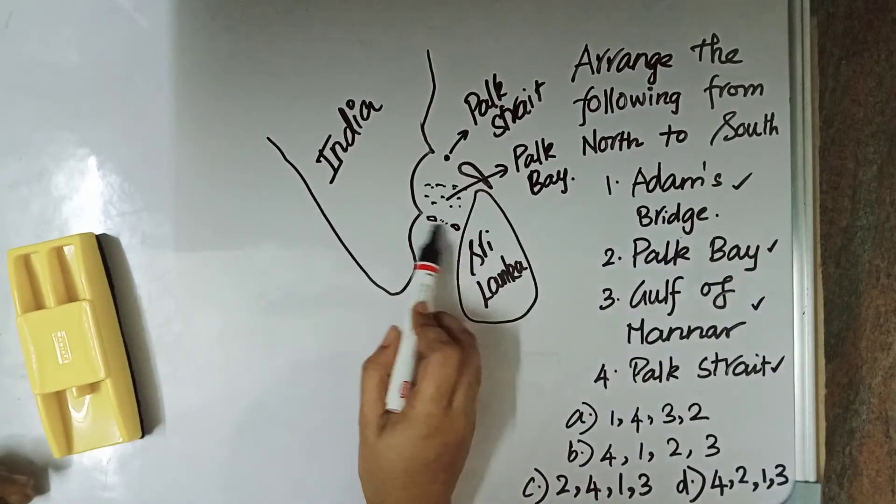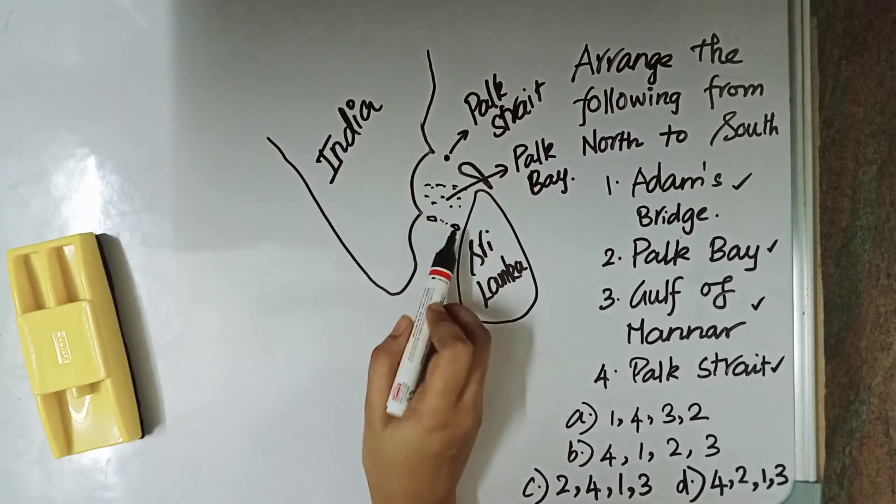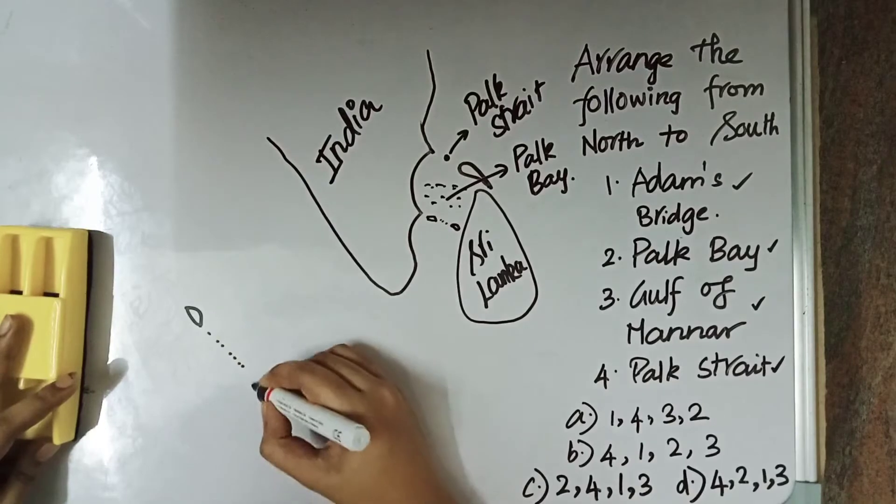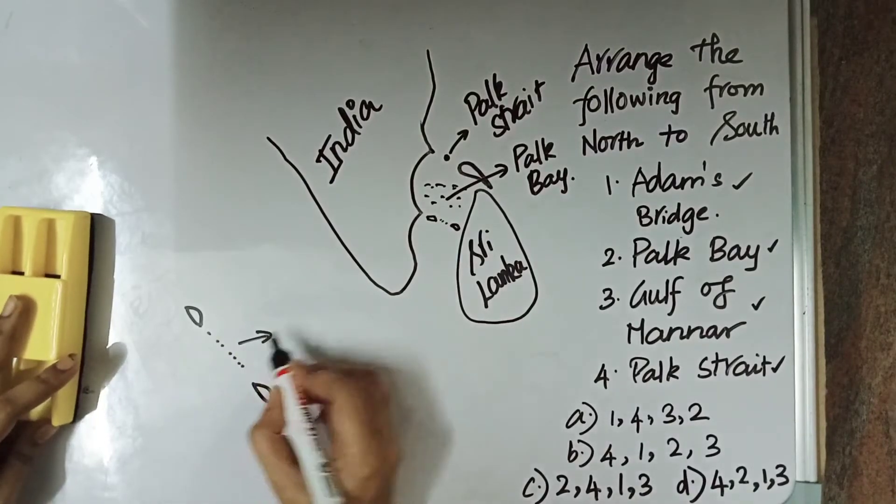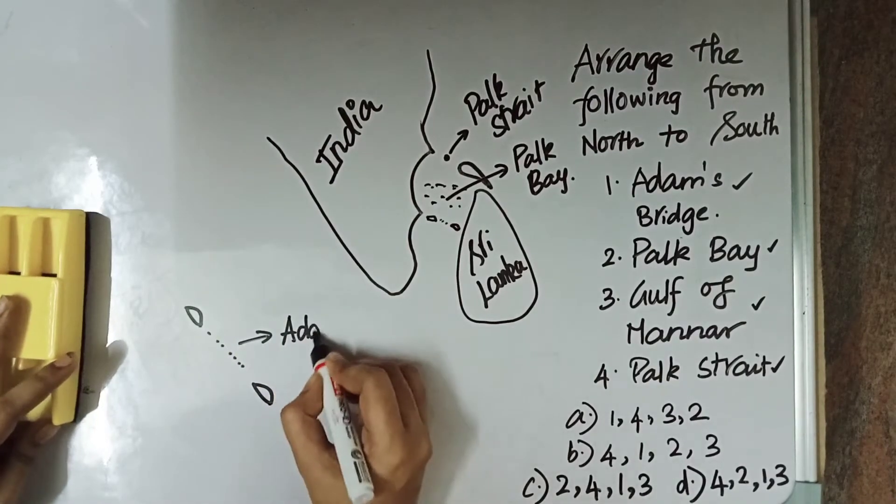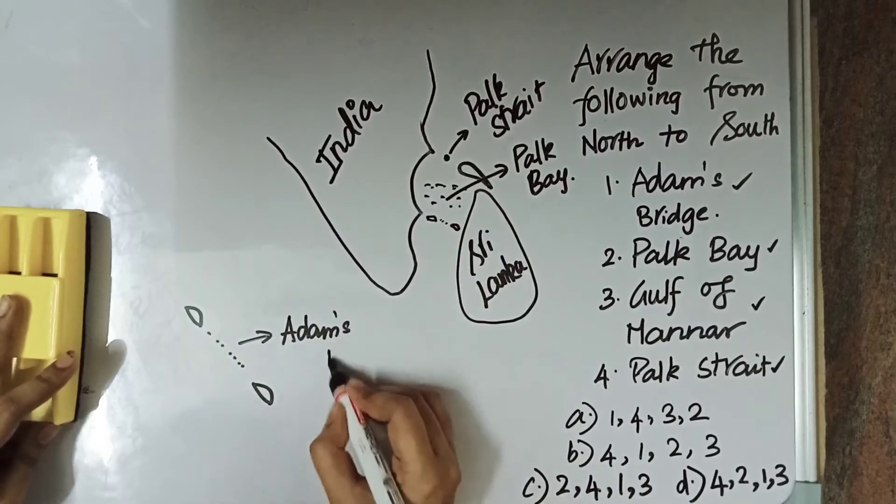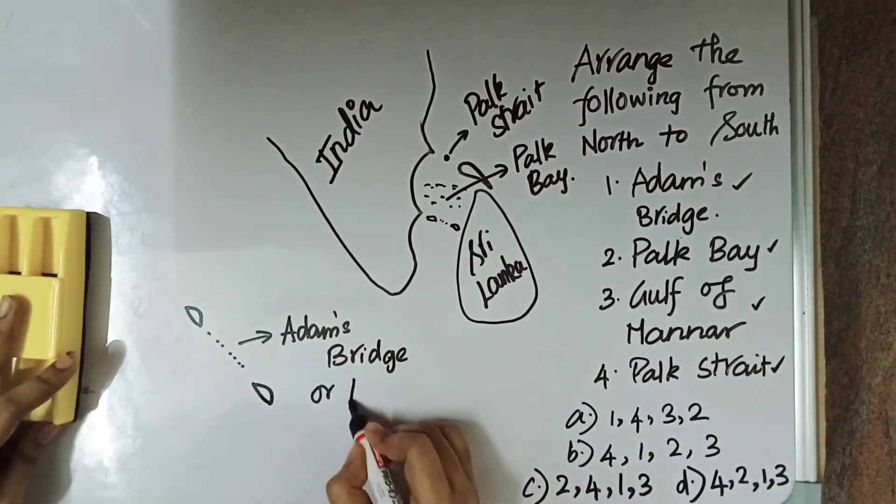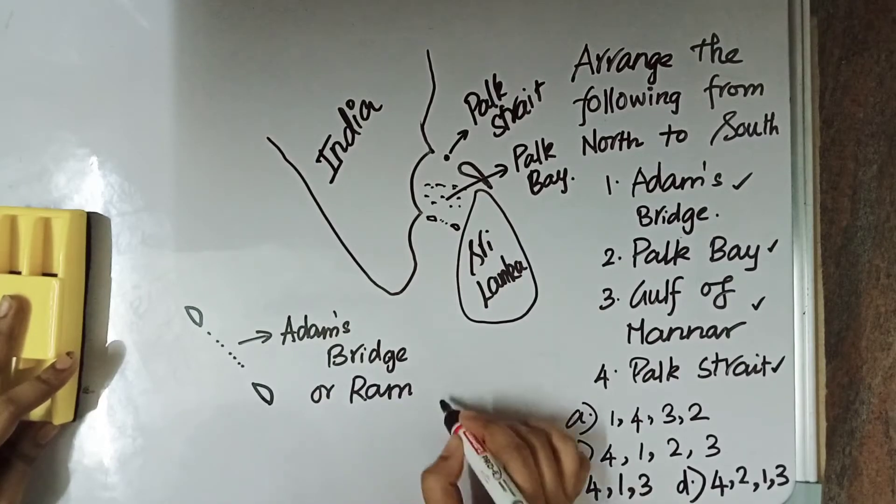And this is the bridge. This region. I will draw it here. This is called Adams Bridge. It is also called Ram Sethu in Hindu mythology.